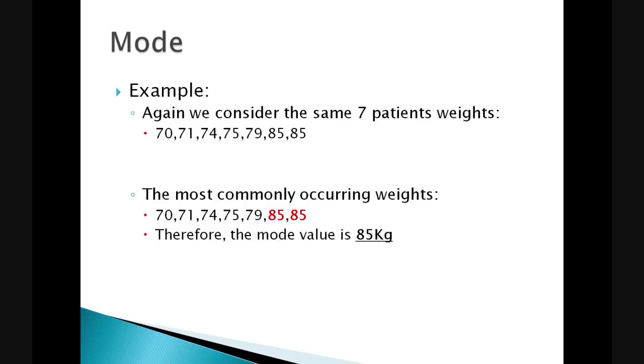Again, if we consider the same example, for the same seven patients, we find that there are two patients who both weigh 85 kilograms. This therefore is the most commonly occurring value in this dataset. Therefore, we determine that the mode is 85 kilos.